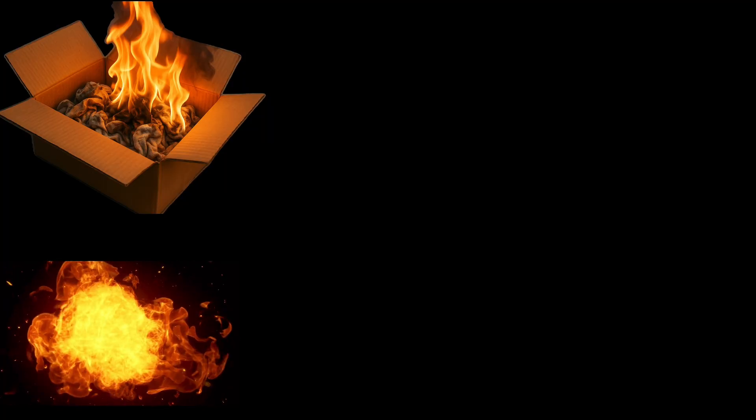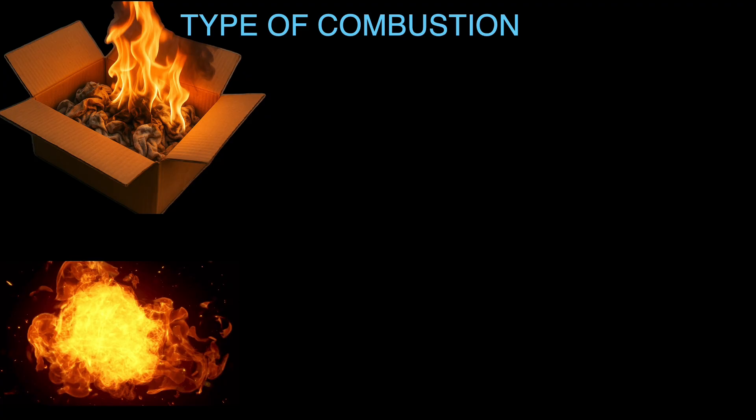These are all examples of different types of combustion. And what is combustion? It is the process where combustible substances react with heat and oxygen. But here is the cool part — it is not always big and flashy. Some types of combustion are so slow that you can't even tell they are happening.